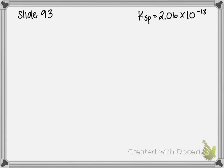All right, this is our last example problem for chapter 18. This is on slide 93. Basically, this is a calculation dealing with the minimum amount of an ion needed to selectively precipitate something.